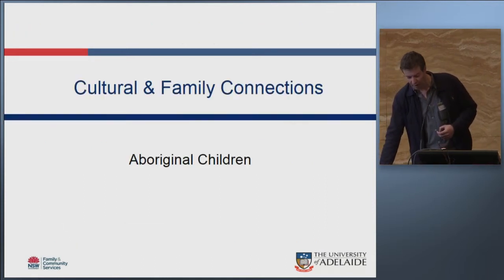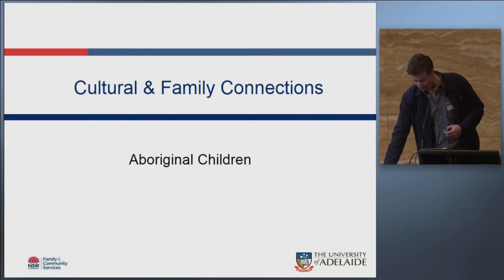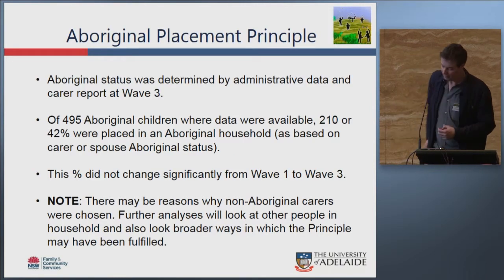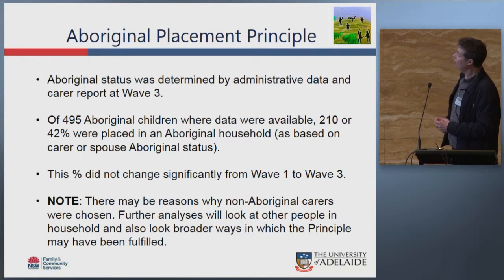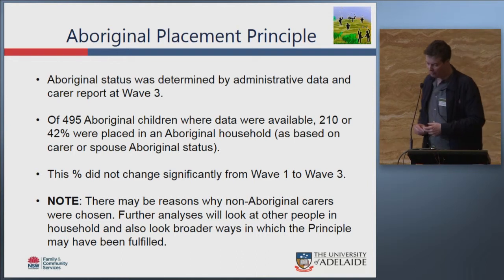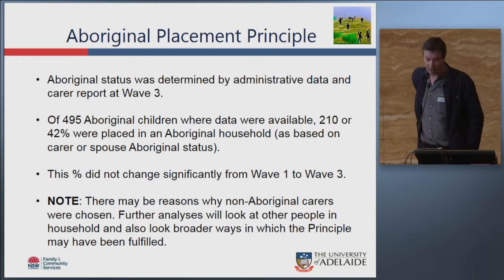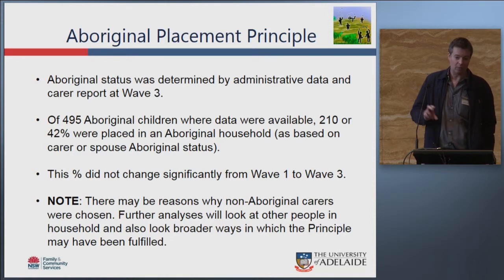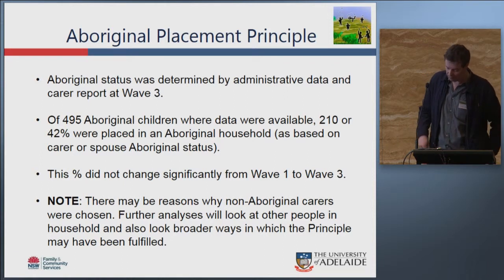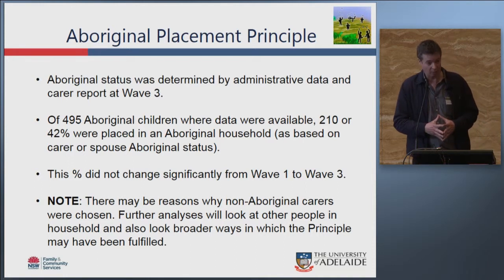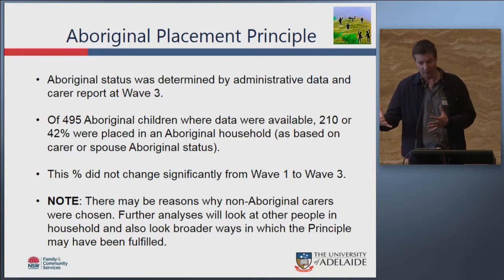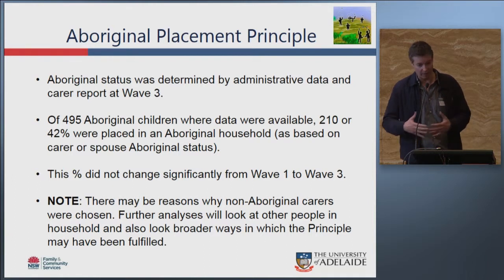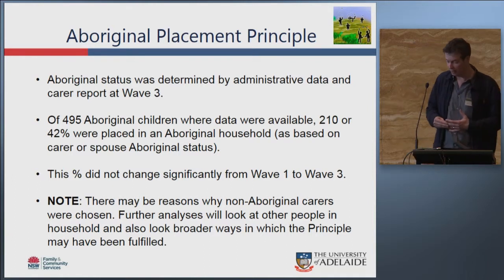Looking at cultural and family connections: regarding the Aboriginal placement principle, 42 percent of Aboriginal children were placed with Aboriginal households, and this did not change significantly from wave one to three. However, when we consider other relatives within households and kinship care broadly, this figure may well be considerably higher.